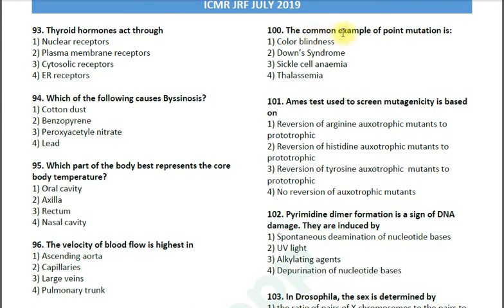Question number 100: The common example of point mutation is — options are color blindness, Down syndrome, sickle cell anemia, and thalassemia. This is a direct and easy question. The correct answer is option number three, sickle cell anemia. Sickle cell anemia is a point mutation in the beta chain of hemoglobin, because of which glutamic acid is replaced by valine.